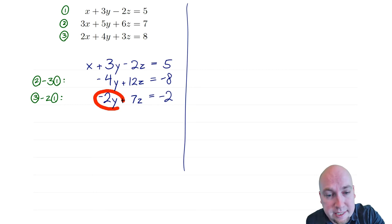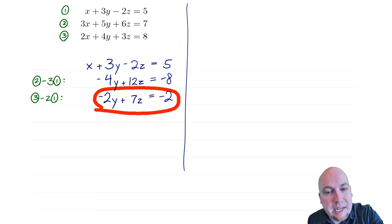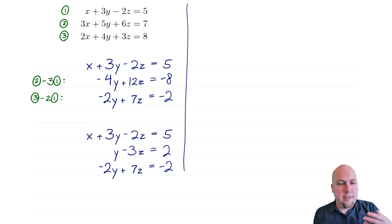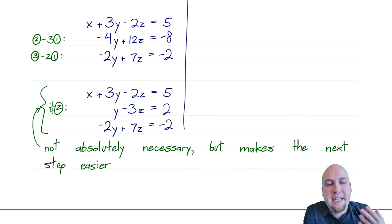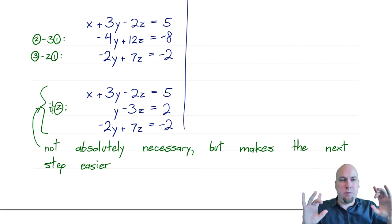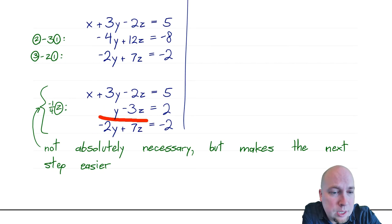I could add one half of equation two to equation three, but to make my life easier I'll first rescale the second equation. I notice every coefficient in the second equation is a multiple of 4, so I multiply it by minus a quarter. That won't change the solution set; it just makes that second equation prettier. So I'm doing the fraction now. Then I take two copies of row two and add it to row three, which eliminates the y term in equation three.